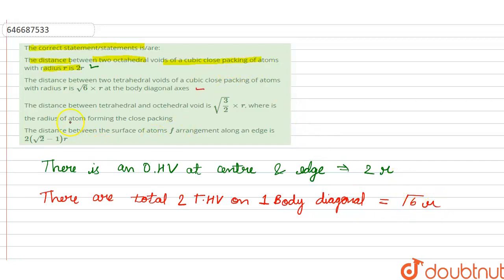And the third is the distance between the tetrahedral and octahedral void is root 3 by 2r where r is the radius of atom forming the close packing. So as we know that there is an octahedral void on center which lies on the body diagonal and tetrahedral void on diagonal, so their distance also comes out to be root 3 by 2r.